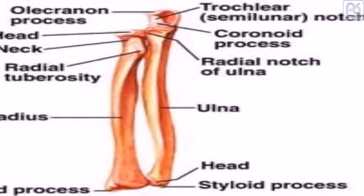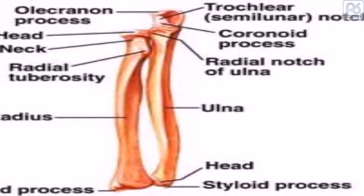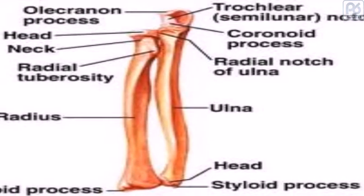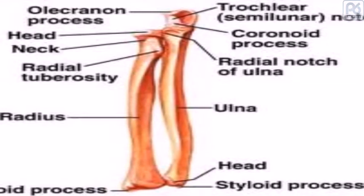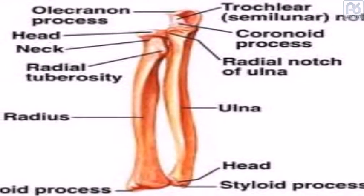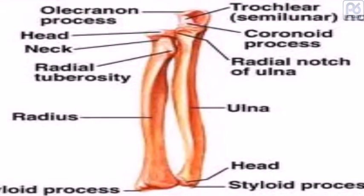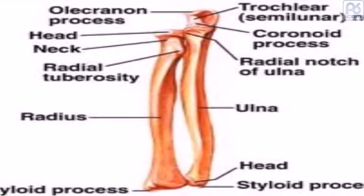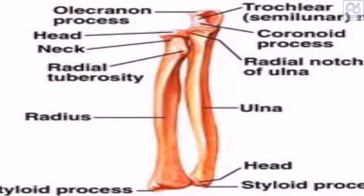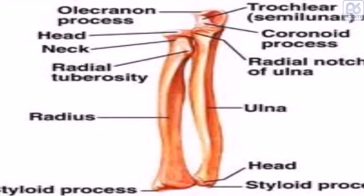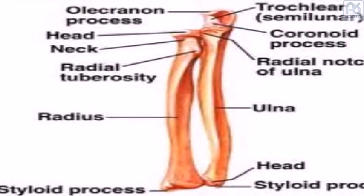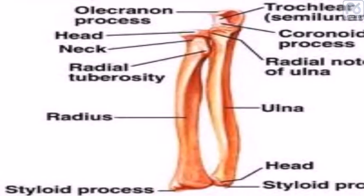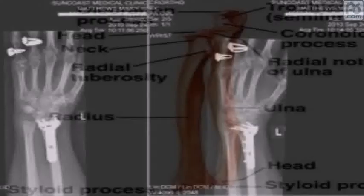The radius is one of the two large bones in the forearm, the other being the ulna. It extends from the lateral side of the elbow to the thumb side of the wrist and runs parallel to the ulna, which exceeds it in length and size. It is a long bone, prism-shaped and slightly curved longitudinally.